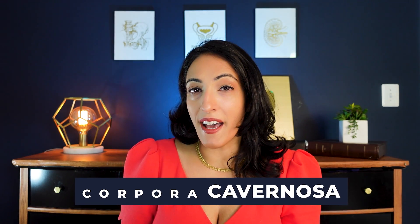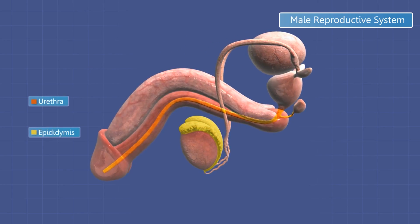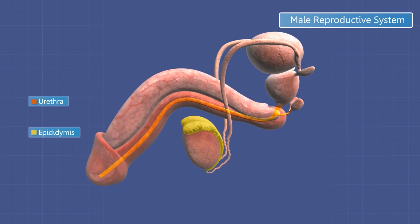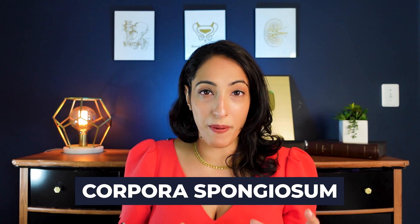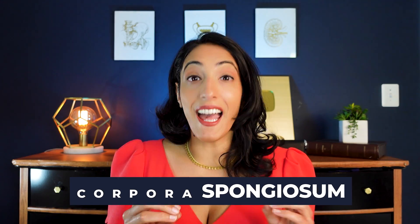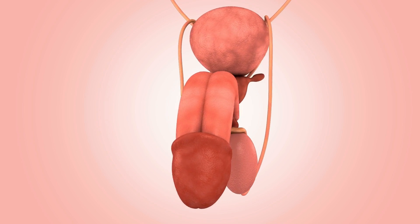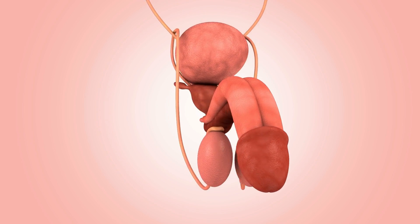Below that, on the bottom — or what we call the ventral side of the penis — you'll see the urethra, or the tube from which pee comes from. Around the urethra there's also an erectile tissue called the corpora spongiosum. This corpora spongiosum that goes around the urethra actually widens to become the head of the penis, and the glans penis has a few different parts associated with it as well.